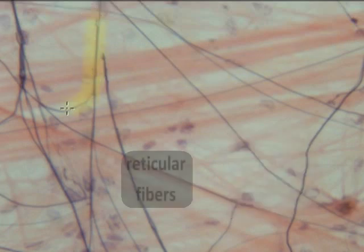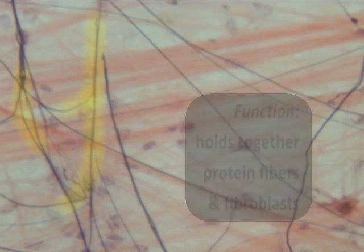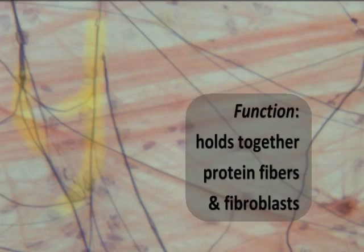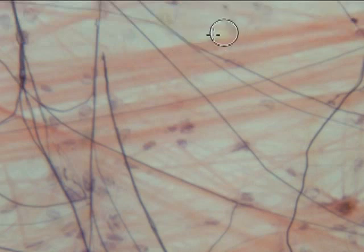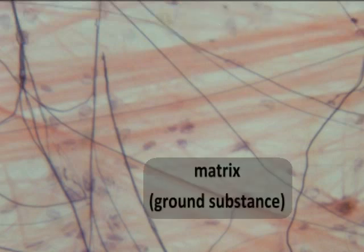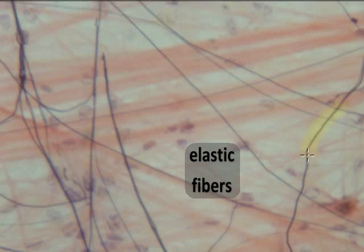There are also some reticular fibers — 'reticular' refers to a branching, spiderweb-like appearance where this network of proteins helps hold these diverse protein fibers, fibroblast cells, macrophages, and other cells together within this whole environment. The white area is a semi-solid matrix, which is a ground substance that binds all this material together.